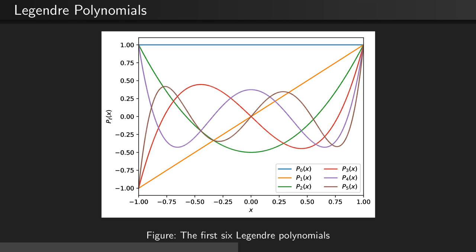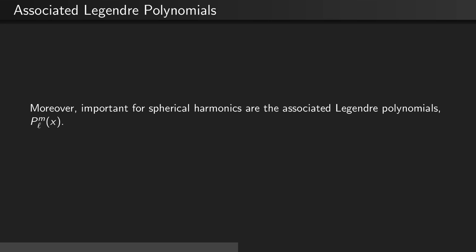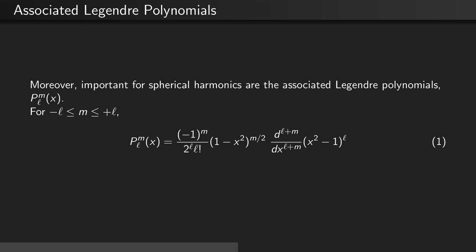Here we see the first six orders of the Legendre polynomials plotted as a function of x. Note that both the domain and range are defined from negative 1 to 1. More so than just the plain Legendre polynomials, the associated Legendre polynomials are important for spherical harmonics, which we'll get to in a moment. We define the associated Legendre polynomials as P sub l m of x, for integer values of m between negative l and l, as defined here.